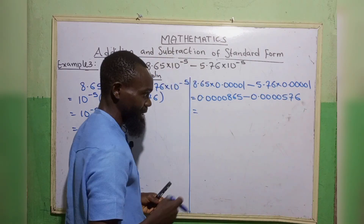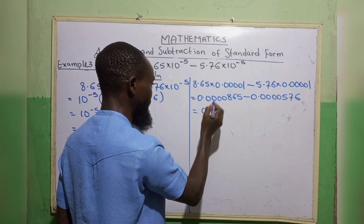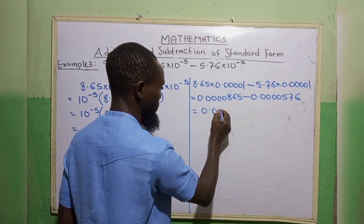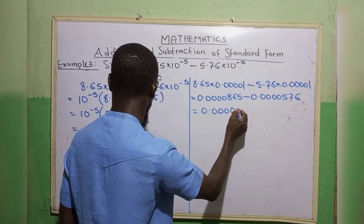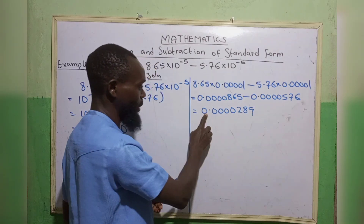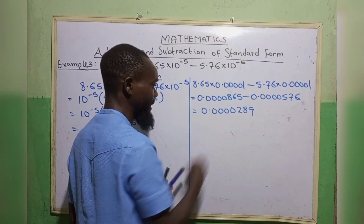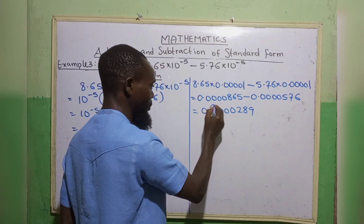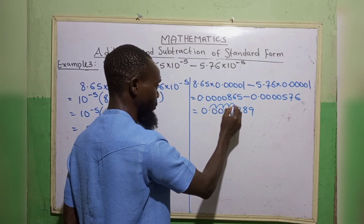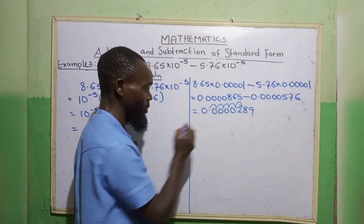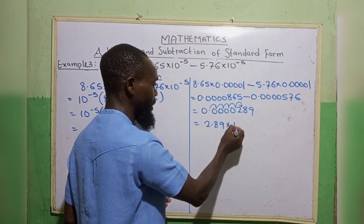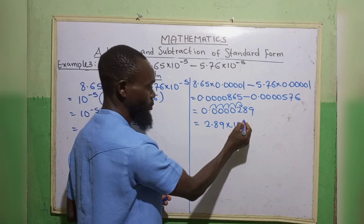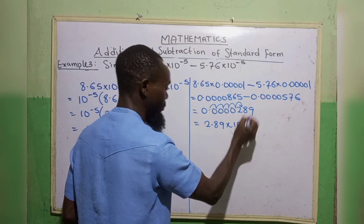Now we subtract, and we have 0.0000289. But in standard form, this decimal point has to be moved to the back of the first non-zero digit — we move backward 1, 2, 3, 4, 5 times. So we have 2.89 times 10 to the power minus 5. We moved backward, and when moving backward, the power of 10 is negative — and we moved 5 times, which gives minus 5.